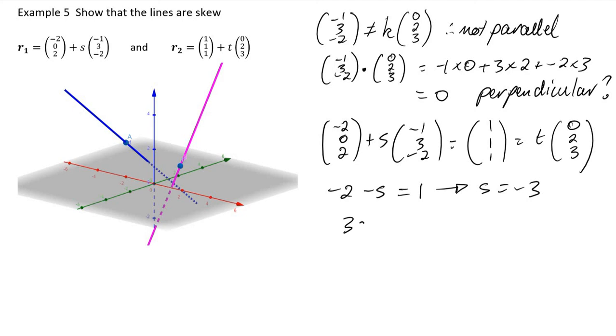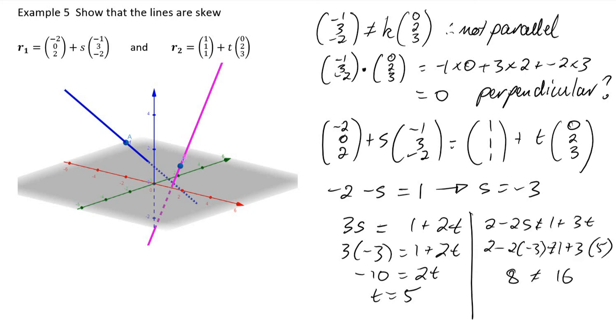From our second equation, if s is negative 3, then t is 5. From our third equation, that is not true, therefore there is no point of intersection. So the vectors are skew.